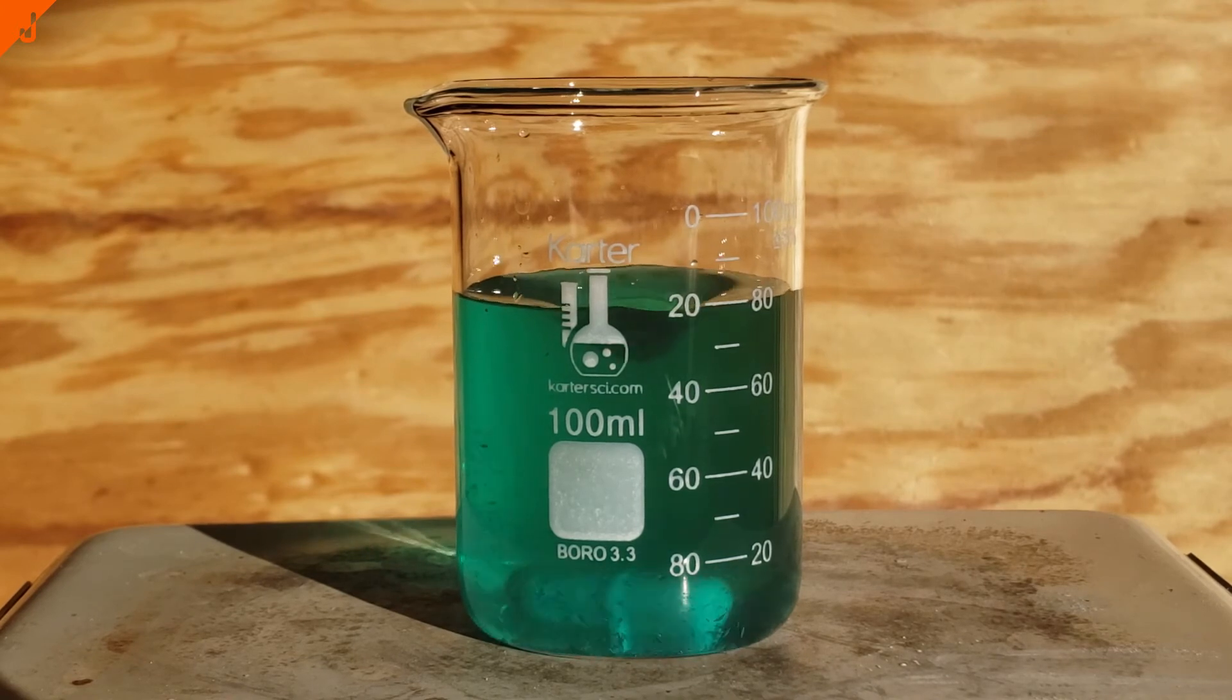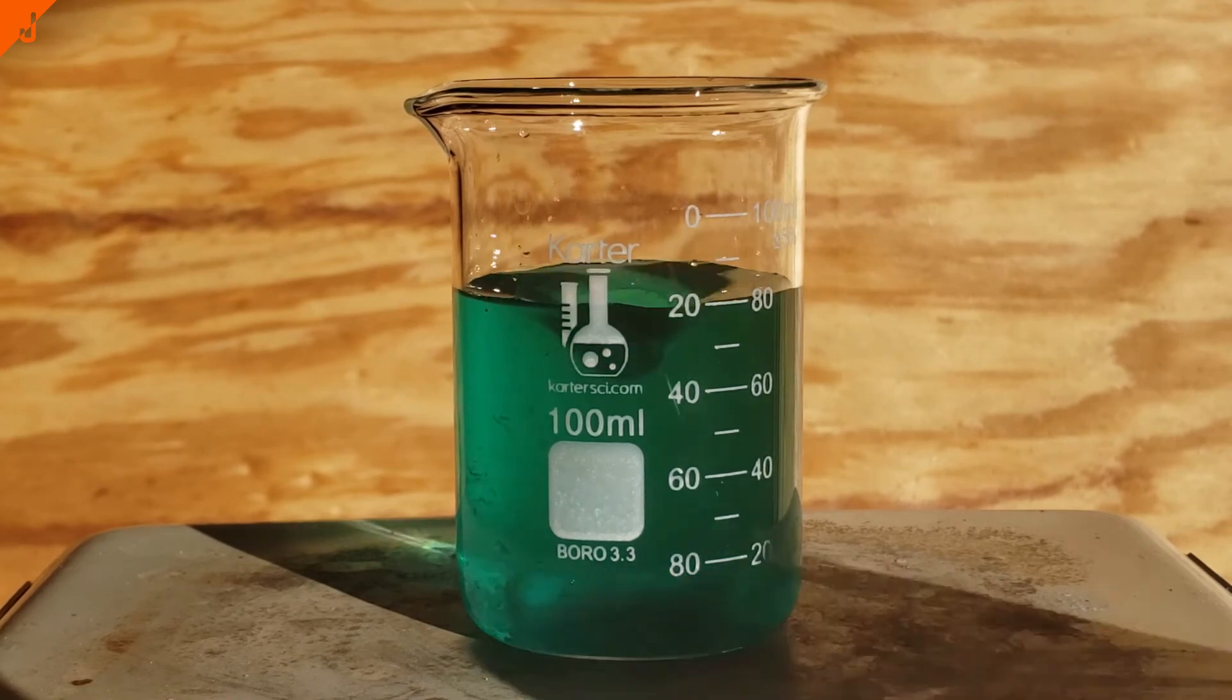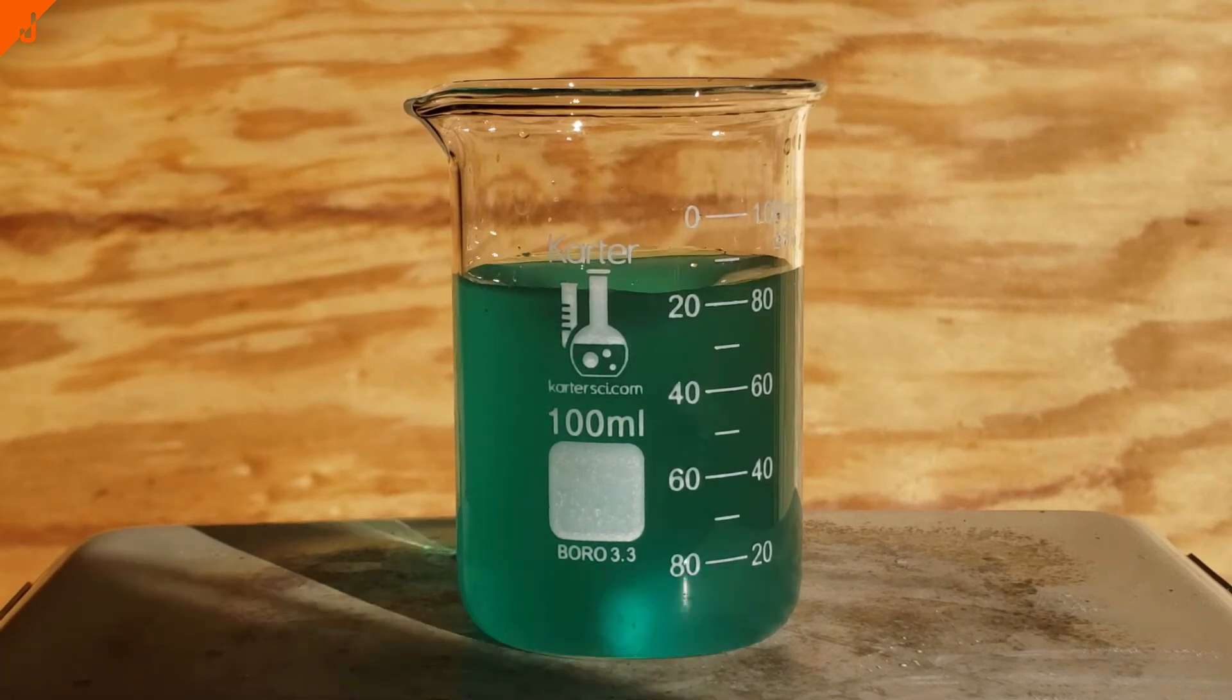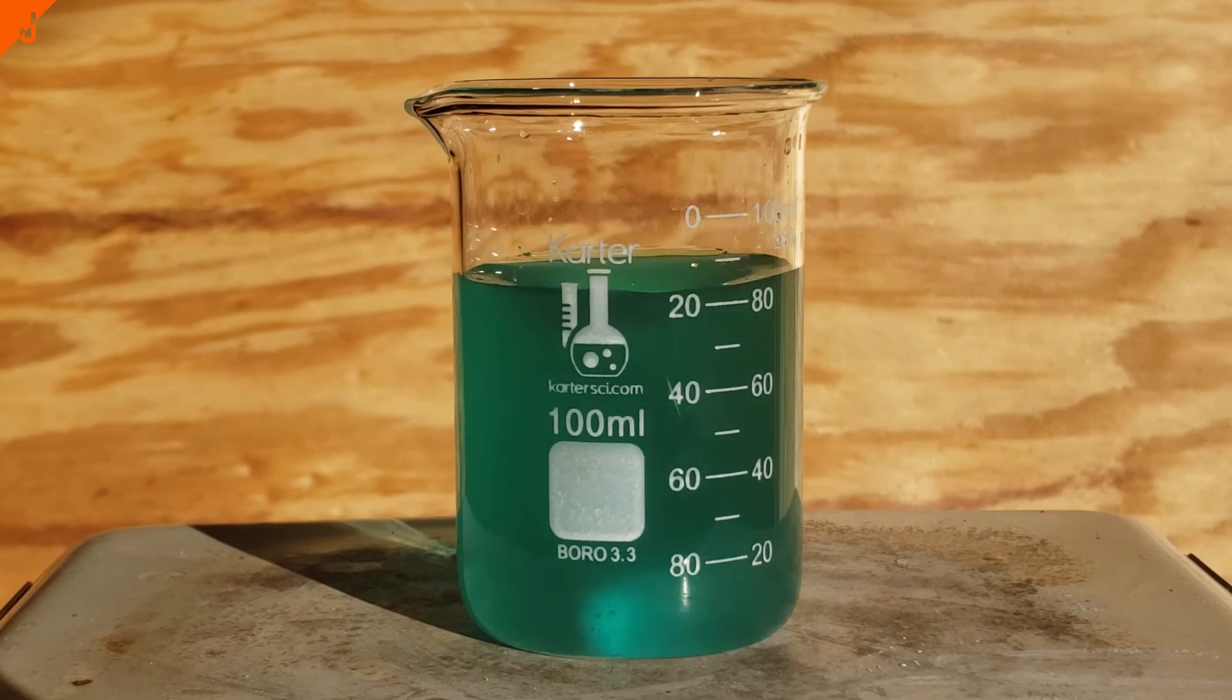As I let the solution stir for a few minutes, I noticed a precipitate began to form. From what I can tell, this precipitate is likely a mixture of different things, between potassium sulfate as a byproduct and unreacted potassium bromide or copper sulfate.